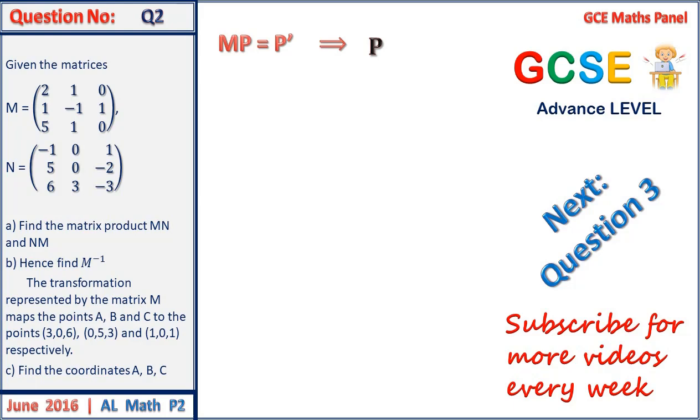This implies solving for P will give us M inverse times P prime. That is, we multiply both sides by pre-multiplication by the inverse of matrix M, and that will give us P, which we are looking for, equal to M inverse times P prime.